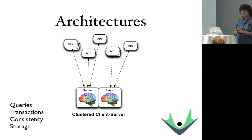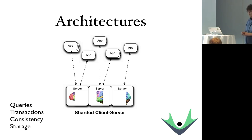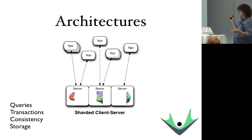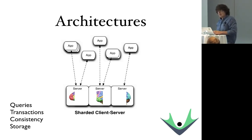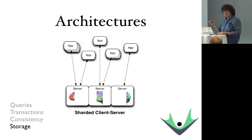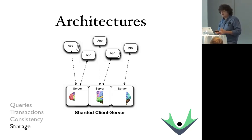In an effort to get even more scale, we've taken those servers and divided them up and sharded the data. At the point you shard the data, you really end up with independent databases. You can't query across shards. You can't do transactions across shards. You can't ensure consistency across shards. And sharded servers really have fewer capabilities — storage subsystems may still be serviced, but that's about it.